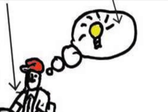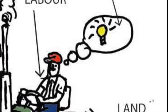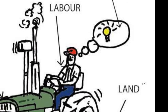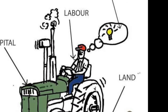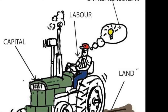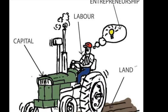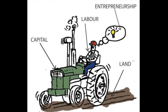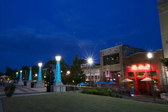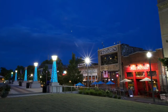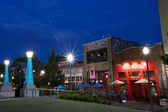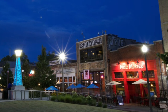Question number two: define the factor market. That is where businesses buy the factors of production — you're going to find land, capital, entrepreneurship, and labor there. Or, define the product market. That's where you buy a good or a service — so that's the mall, the dentist office, amazon.com, any of those things.